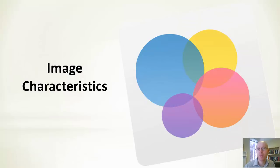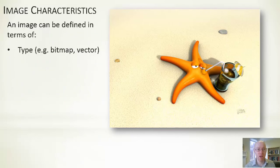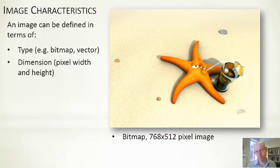Let's have a brief review of some key image characteristics. When thinking about an image, we can define it in different ways — bitmap images or vector images. In this course, we're talking about bitmap images, so we will be manipulating bitmaps. A bitmap image will have a width and a height measured in pixels or texels — a certain number wide, a certain number deep.